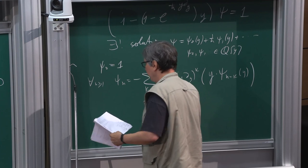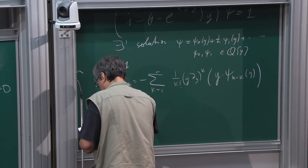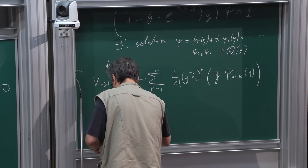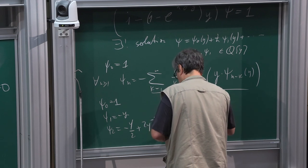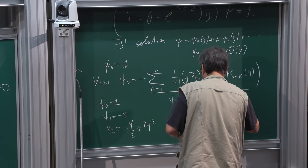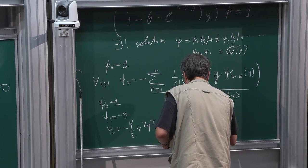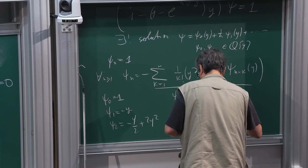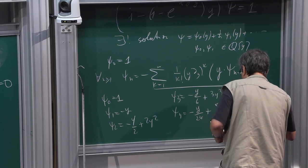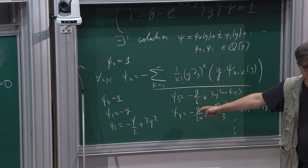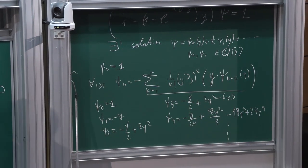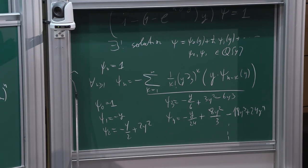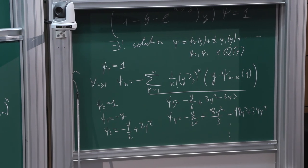You substitute and get a recursion: ψ_n = −Σ_{k=1}^{n} (1/k!) (y ∂_y)^k applied to y times ψ_{n−k}. And you get: ψ_0 = 1, ψ_1 = −2, ψ_2 = −y/2 + 2y², and so on. These are really funny polynomials — the first coefficients are 1 over factorials and the last are factorials.